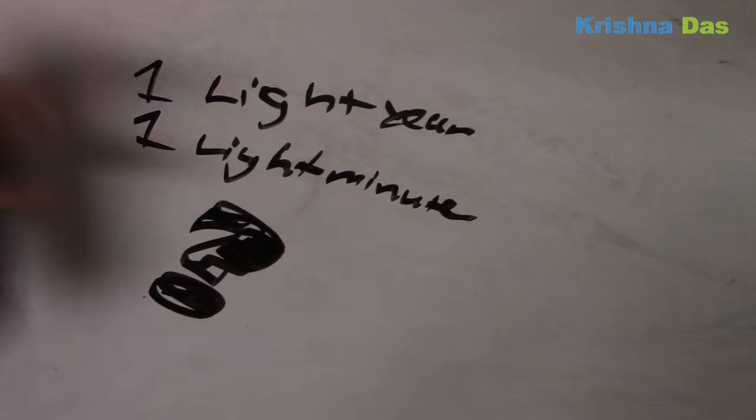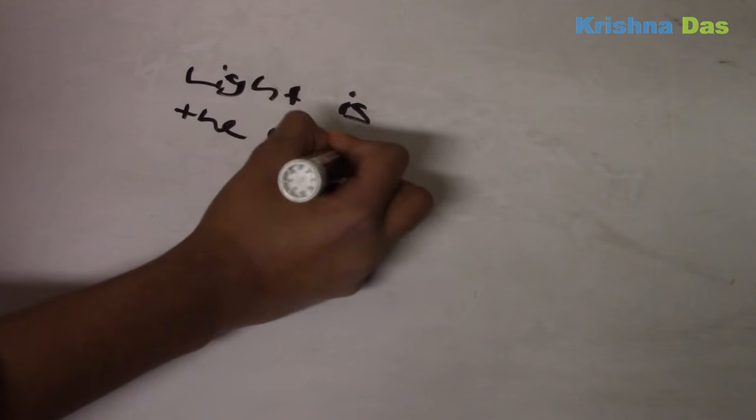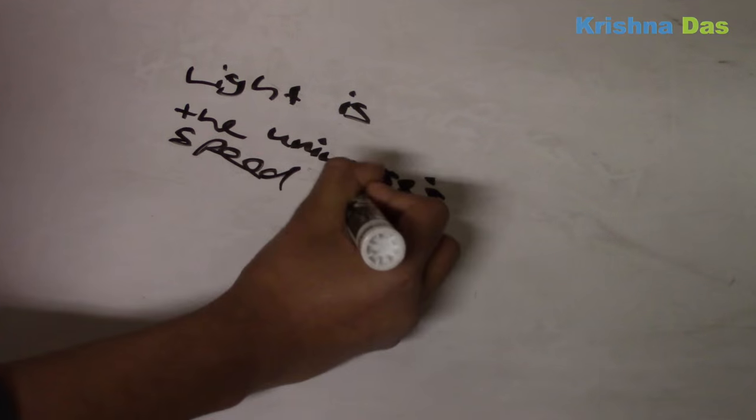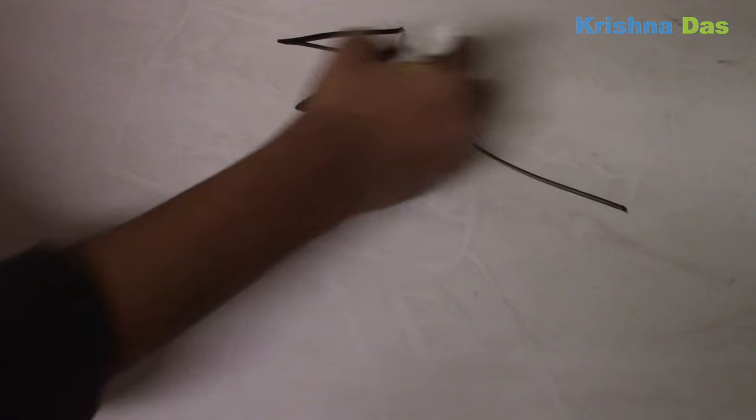Eventually in math, eventually when we need to know what's like year and like minute and like second. We need to prove this in theory and it is the universe speed limit. There's nothing faster than it.